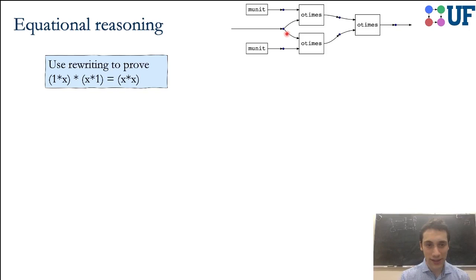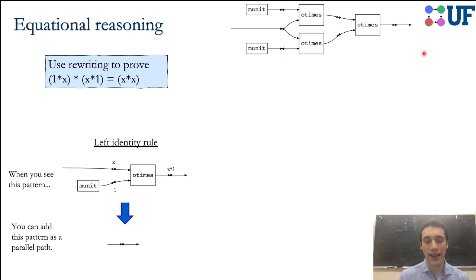With that said, we want to prove that 1 times x times x times 1 is equal to x times x. Our rewrite rule is going to have the semantics of if I see the source, I can replace it with the target. So if I see this something being multiplied by 1, I can replace that with a wire that just goes straight through because that's an identity.